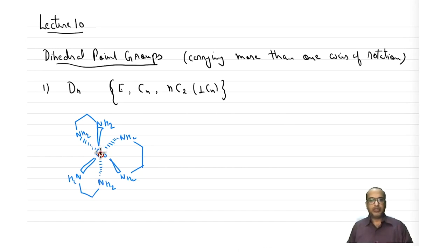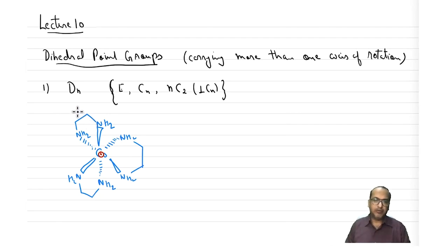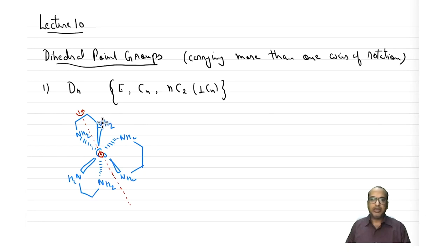The C3 axis rotates the NH2 groups one, two, three and four, five, six. There are also three C2s perpendicular to this C3. One C2 is in the plane of the board — doing this rotation brings one NH2 to another position. Similarly there is a second C2 and a third C2, giving D3 symmetry.